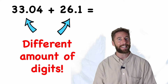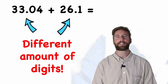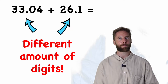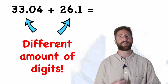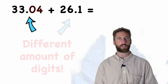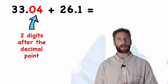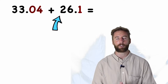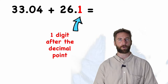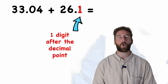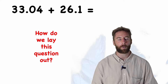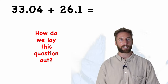Let's have a look at the question thirty-three point zero four add twenty-six point one. I can see straight away that this is a bit different because, again, I have a different amount of digits in each question. Specifically, I have a different amount of numbers after my decimal point. In thirty-three point zero four I have two digits after my decimal point, and in twenty-six point one I only have one digit.